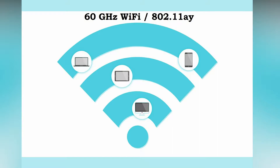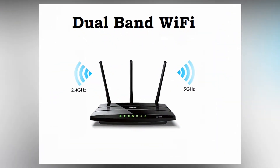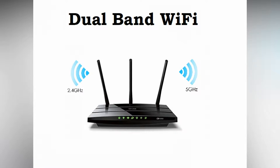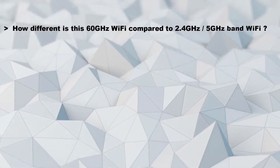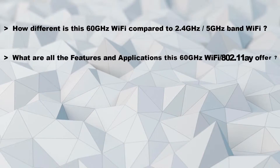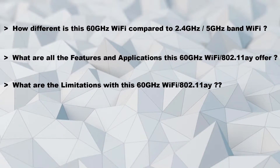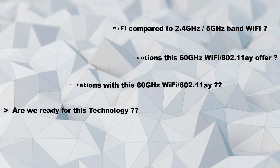You guys must have heard of dual-band Wi-Fi, 2.4 or 5 Gigahertz bands. In the recent past, the 60 Gigahertz unlicensed band has been added along with dual-band Wi-Fi. You must have so many questions like: how different is this 60 Gigahertz Wi-Fi compared to 2.4 or 5 Gigahertz? What features and applications does 802.11ay offer? What are the limitations? Are we ready with this Wi-Fi technology? If you want to find out all the answers, watch the video till the end. Without any further delay, let's get started.